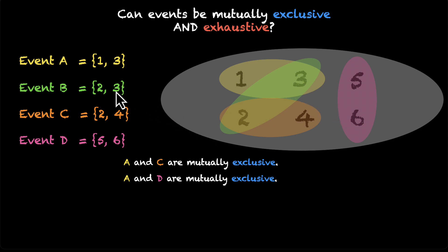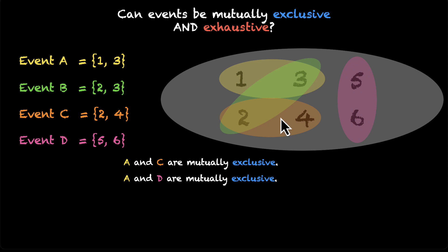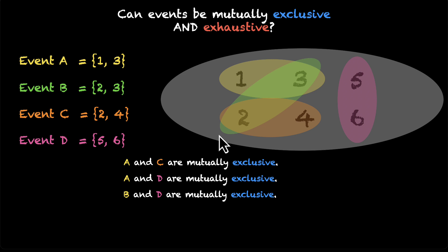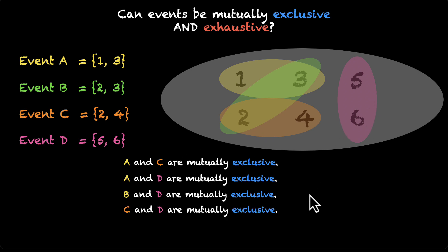What about B and C — green and orange? They also overlap, so they're not mutually exclusive. What about B and D — green and pink? They don't overlap, so they're mutually exclusive. What about C and D — orange and pink? {2,4} and {5,6}: no overlap, which means they're mutually exclusive.